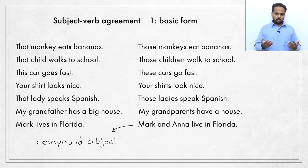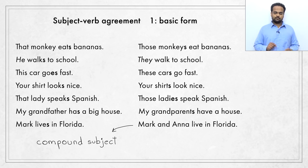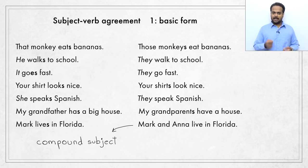There are a lot of nouns in these sentences, but in natural speech and writing we often use pronouns in the place of nouns to avoid repetition. For example, instead of 'that child' I can say 'he walks to school,' and instead of 'those children,' 'they walk to school.' In the place of 'that lady' I can say 'she speaks Spanish,' and for the plural again, 'they speak Spanish.' 'This car goes fast' can be rewritten as 'it goes fast,' and 'these cars' becomes 'they go fast.'